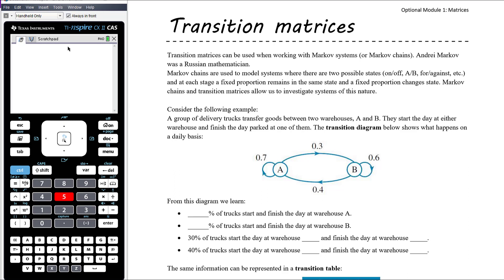Transition matrices are used when we're working with something called a Markov system or Markov chain. Andre Markov was a Russian mathematician who devised this process of representing these sorts of situations.